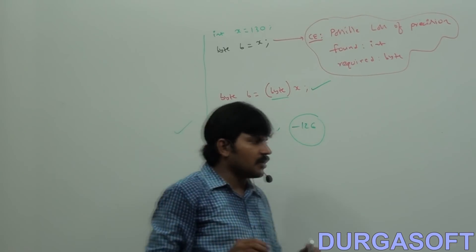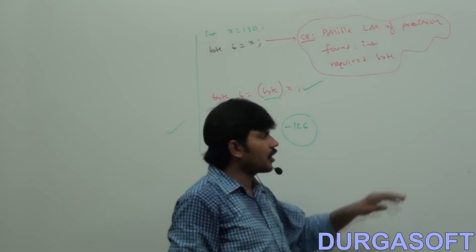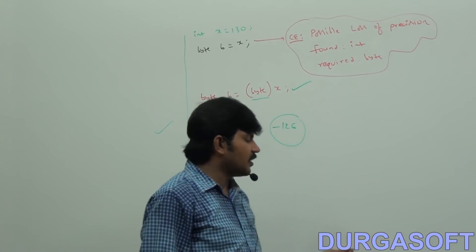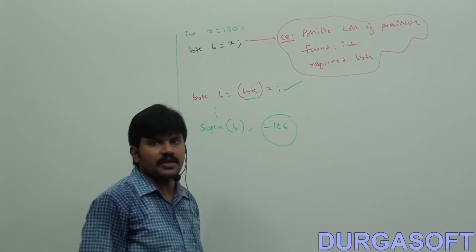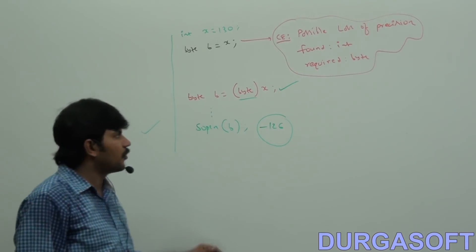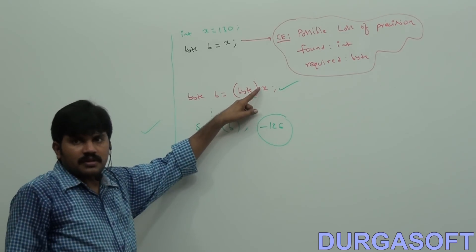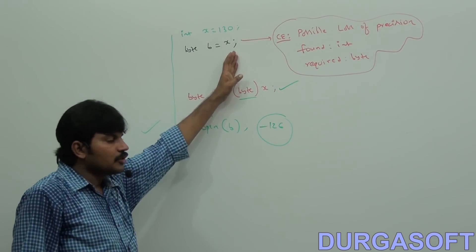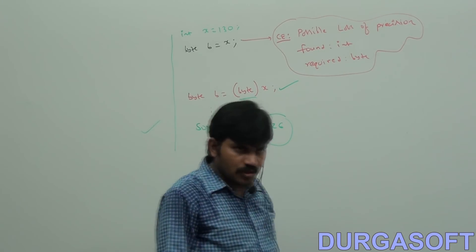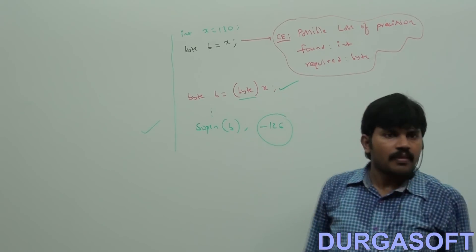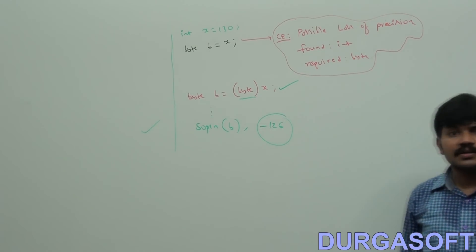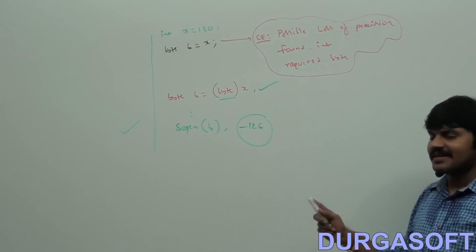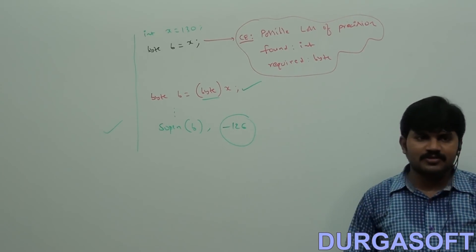The next terminology — make sure you are clearly aware of this. You may ask: how did 130 become minus 126? Because in the exam, they may not ask 130 and expect minus 126.